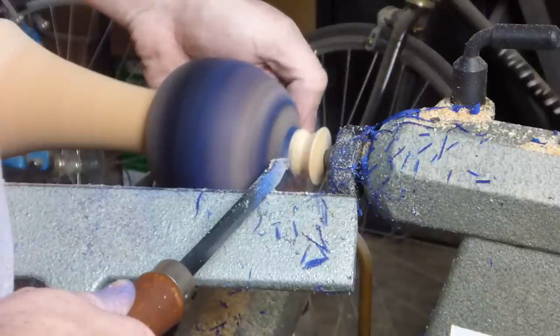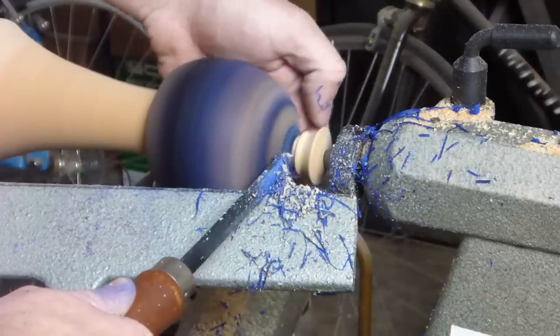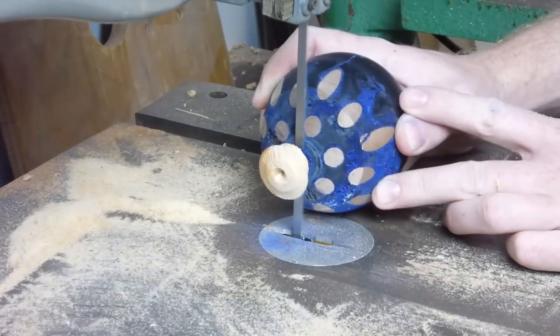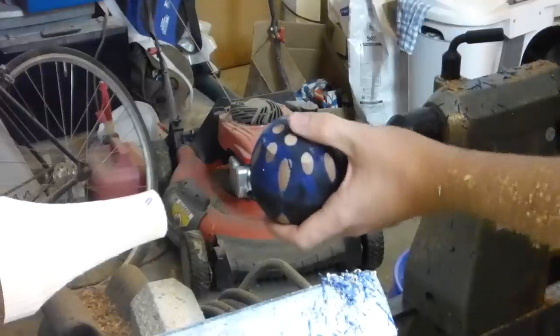But, despite not having a beautiful surface, I had no choice but to continue on. I turned all the wood off and got a rough spherical shape.